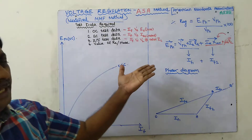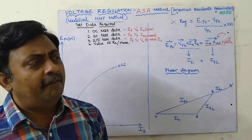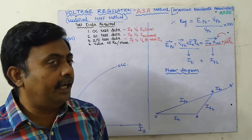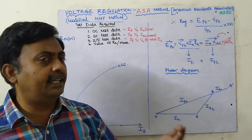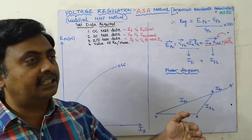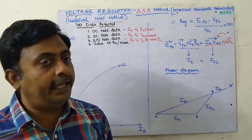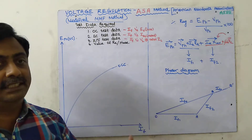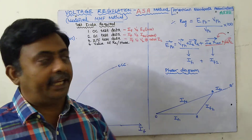What is the drawback of the MMF method? The MMF method is called an optimistic method — it gives a regulation value lesser than the actual value. Why? Because the main reason is that magnetic saturation is not taken into account in the MMF method.